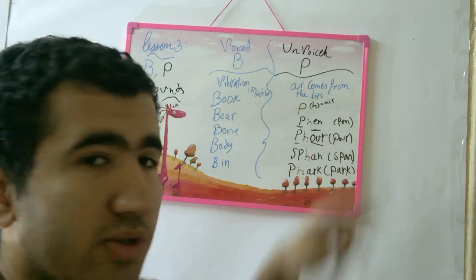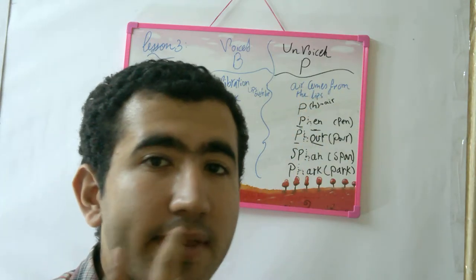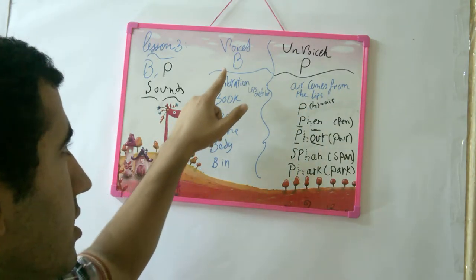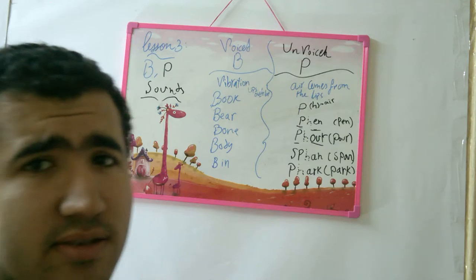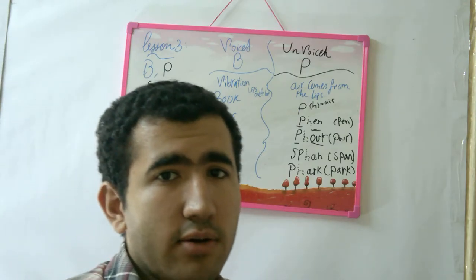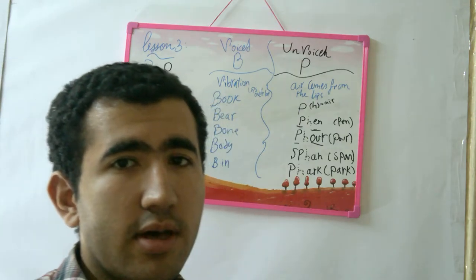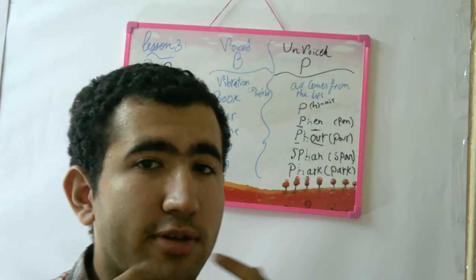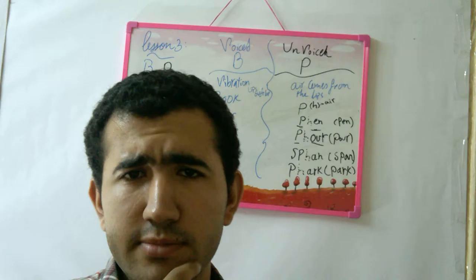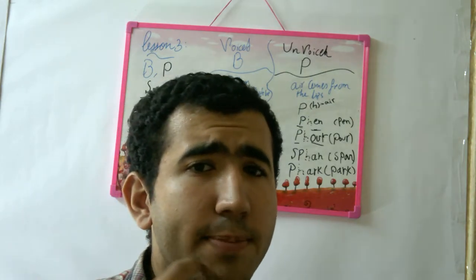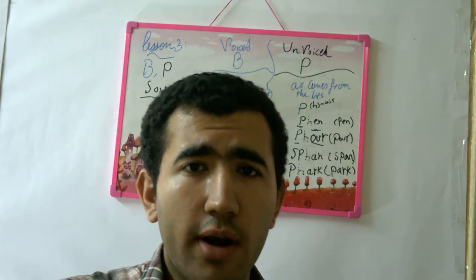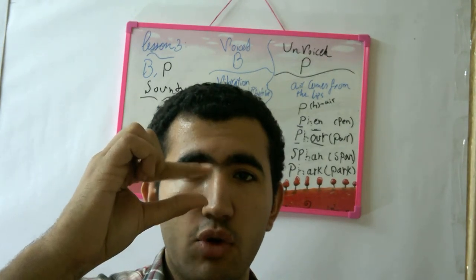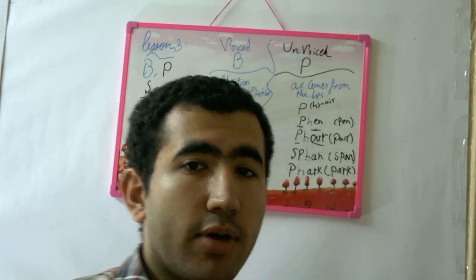Air comes from your lips. Pear, okay. B as in voiced sound — the voiced sound has vibration. There's vibration, and when you say it, your lips overlap. So it's like that — overlap, okay.